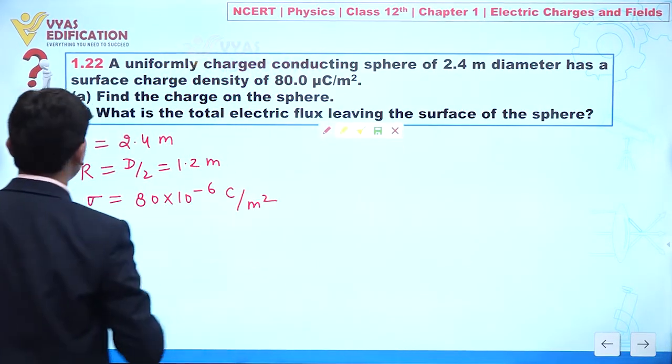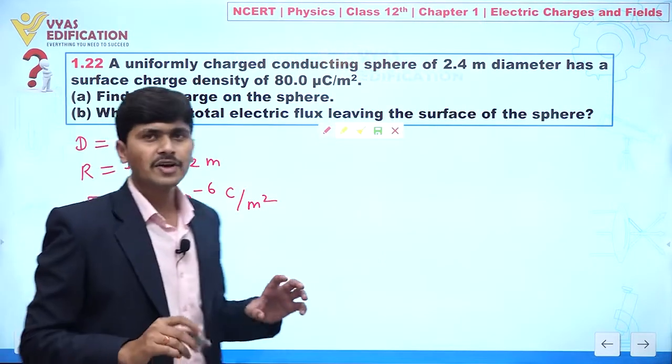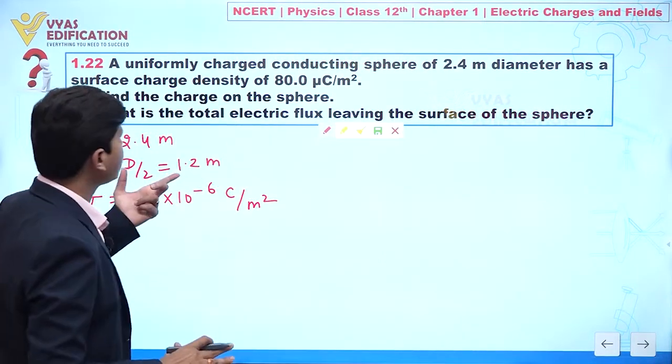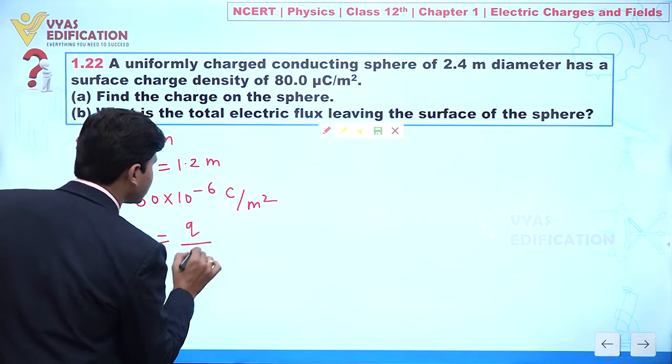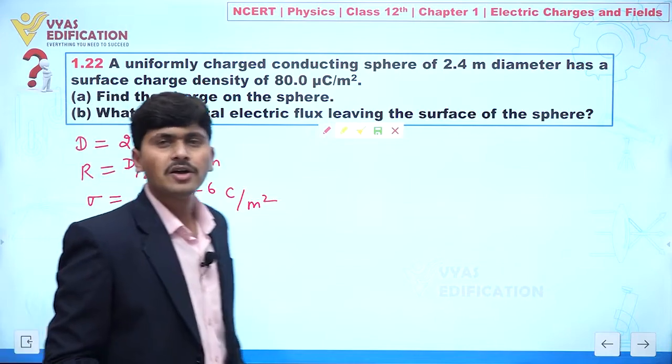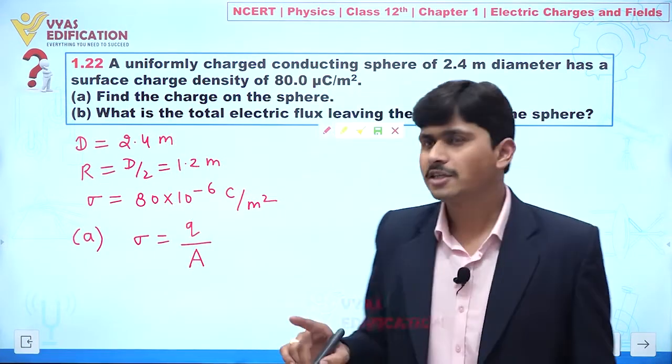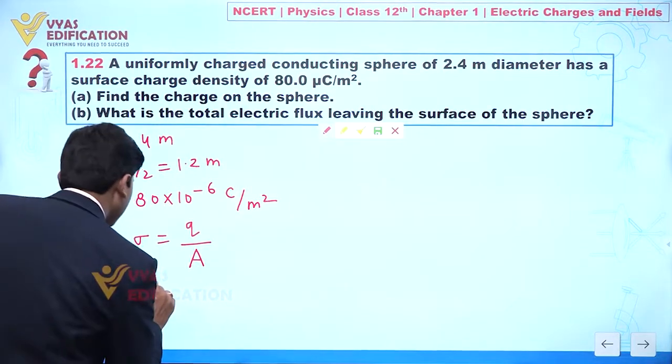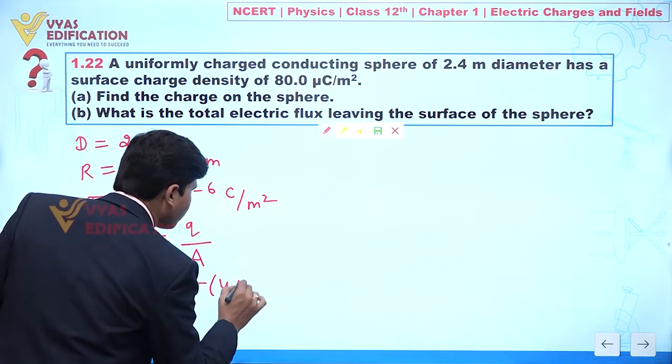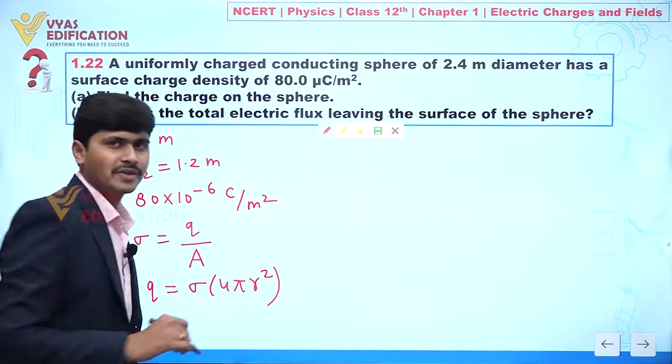Number A part - our objective in this question is to calculate total charge on the sphere. So we can say sigma, this is equal to charge per unit area. Always remember surface charge density means charge per unit surface area. So how can we calculate charge? This is sigma and 4 pi, this is r square.